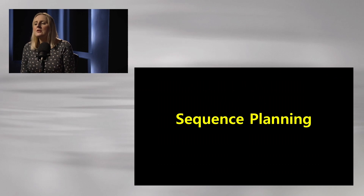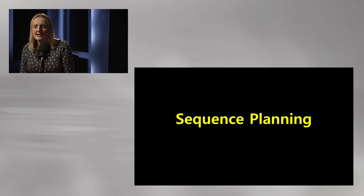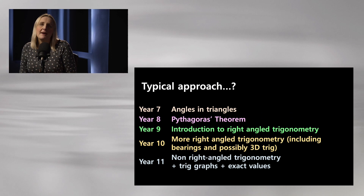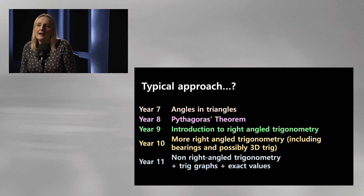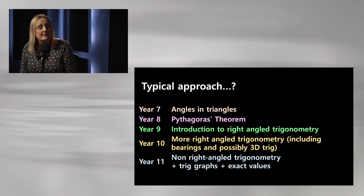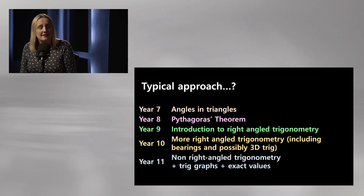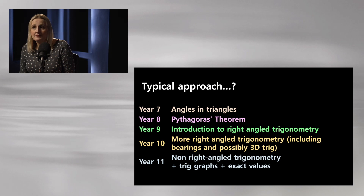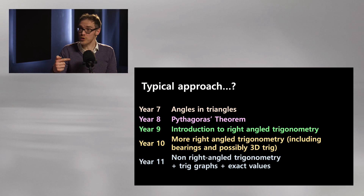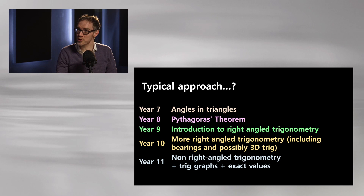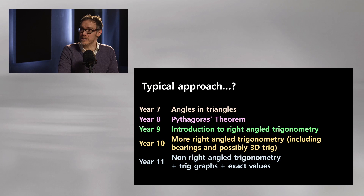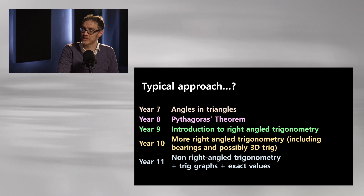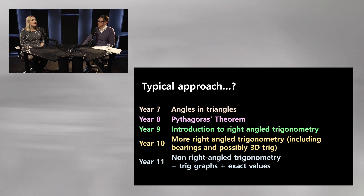Let's talk about sequencing — what order do we teach things? A typical school: angles in triangles in Year 7, Pythagoras in Year 8 or 9, right-angle trigonometry normally in Year 9 — and it is on the Key Stage 3 curriculum. But I think it's done really poorly at Key Stage 3 because it's so rushed. The argument for Year 9 introduction is that when you come back to it in Year 10, they've seen it before, so you can do a recap lesson and go into more depth.